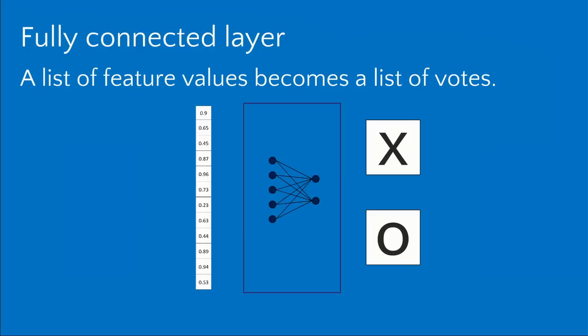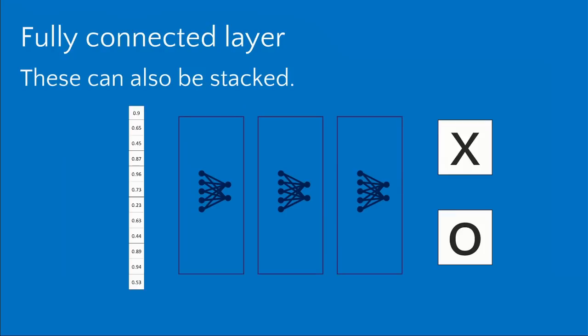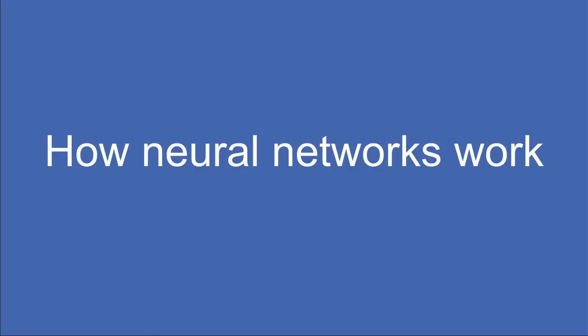This is a fully connected layer: it takes a list of feature values — our filtered shrunken pixels — and produces a list of votes for each output category, in this case X or O. These can also be stacked: you can have hidden layers — secret intermediate categories — where one layer votes on the first set of hidden categories, those vote on the next layer, and so forth until you get to your final outputs.